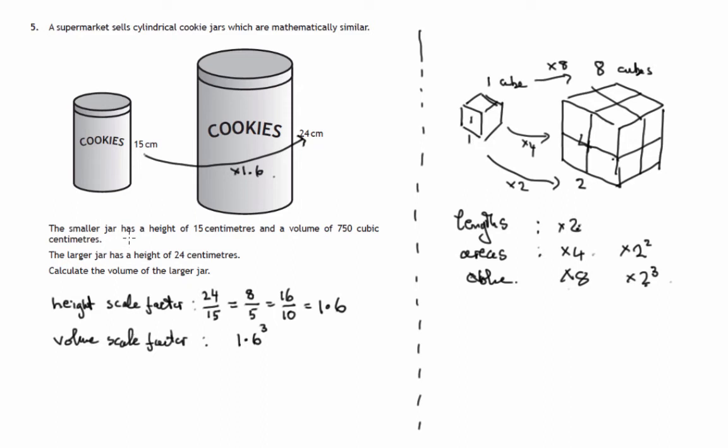So where we had a volume of 750 cubic centimetres, then to get the volume of this, we would be multiplying by not 1.6, but 1.6 cubed, that being the volume scale factor.